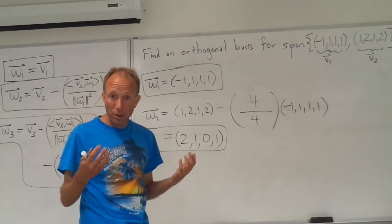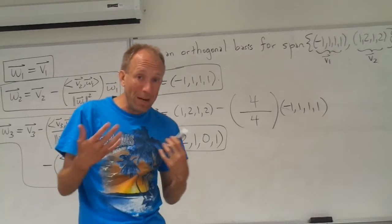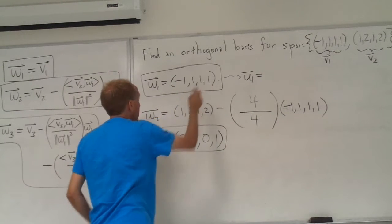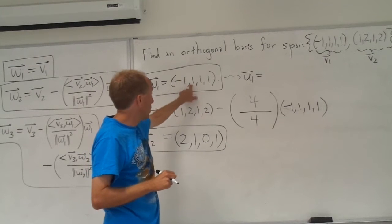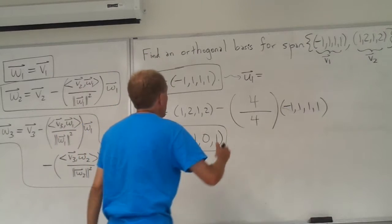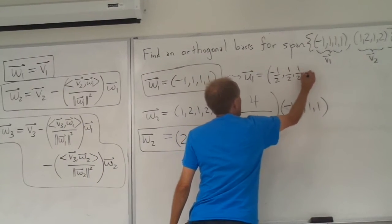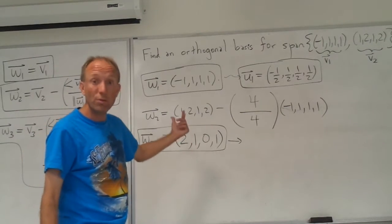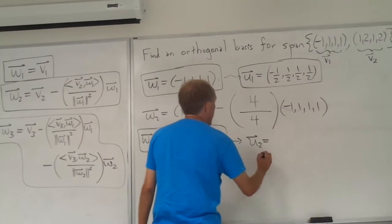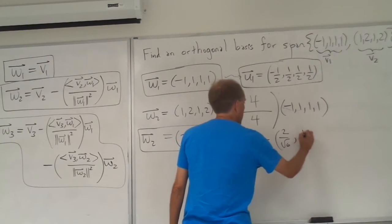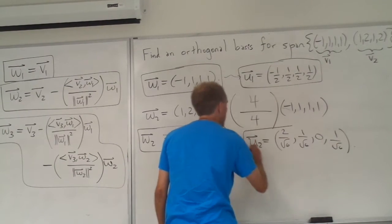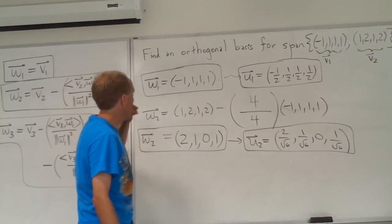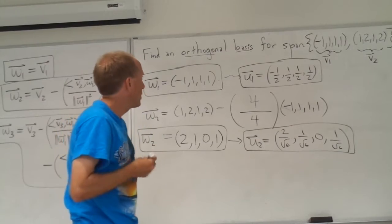Remember, you can also make it orthonormal. Once you have an orthogonal basis, if you simply divide by the norms of these vectors, you could get an orthonormal basis. For example, the norm of w1 is 2 — it is the square root of 1² + 1² + 1² + 1², which is the square root of 4, which is 2. So if we just divide through by 2, we get a unit vector. And for w2, the norm of this vector is the square root of 6, so we could get a unit vector by dividing by the square root of 6. So u1 and u2 would be an orthonormal basis, but w1 and w2 is an orthogonal basis, which is all we were asked to come up with.